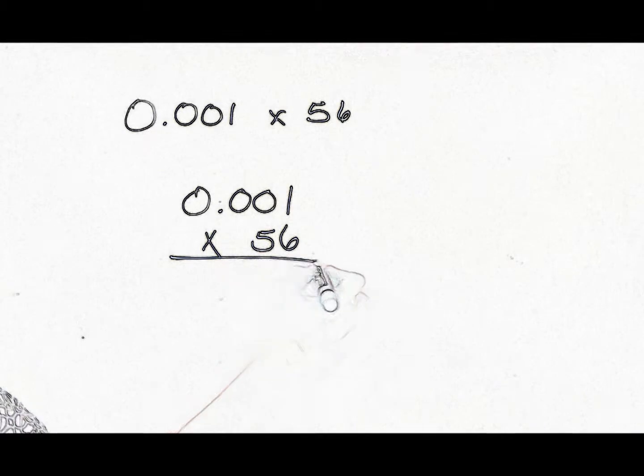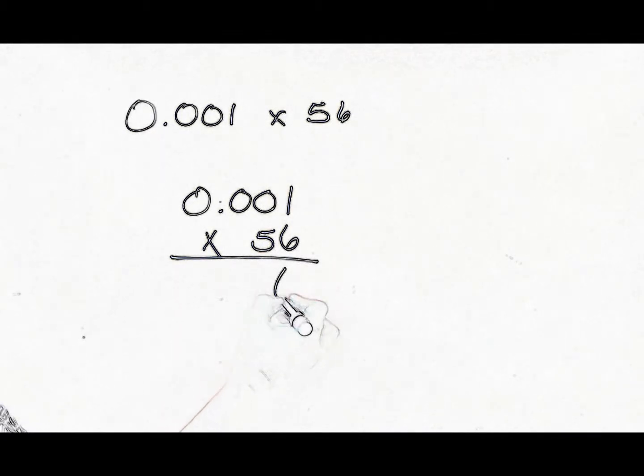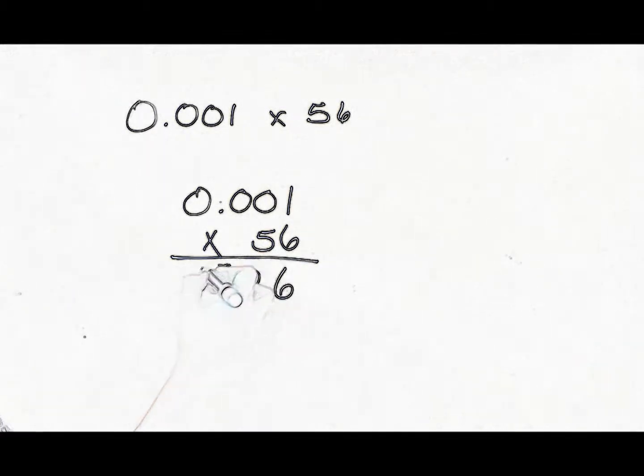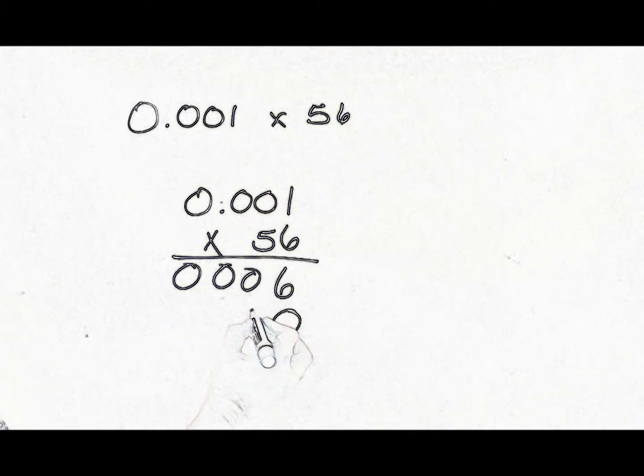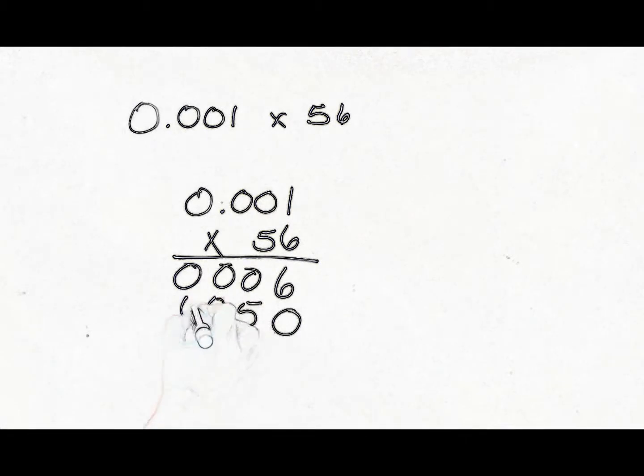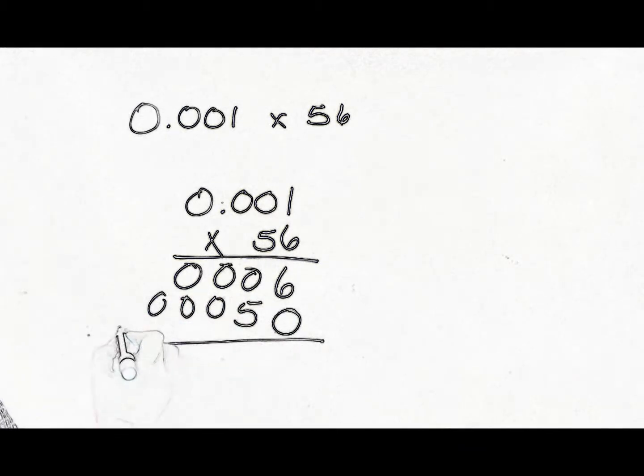And then we're going to multiply. Six times one, and then zero, zero, zero. All right, we'll put our placer in. Now we're under the five. Five times one, five, and then zero, zero, zero. And then we're going to add.